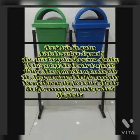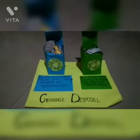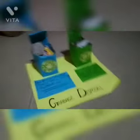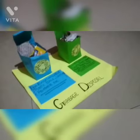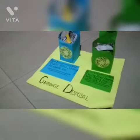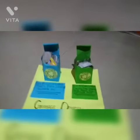How is the twin bin system related to garbage disposal? The twin bin system is a process of setting up two garbage bins in order to separate wastes. It has a green colored bin and a blue colored bin. The green colored bin is for managing household waste like food waste. The blue bin is for managing recyclable products like plastics.